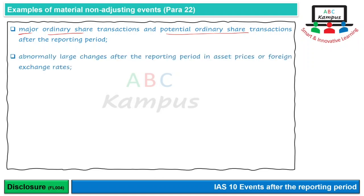Abnormally large changes after the reporting period in asset prices اور foreign exchange rates۔ اگر year end کے بعد foreign exchange rates change ہوں اور آپ کو huge gain یا huge loss ہو — چاہے favorable ہو یا unfavorable — وہ non-adjusting event ہے۔ لیکن اگر amount اتنی زیادہ ہے کہ وہ material ہے، تو پھر non-adjusting event والا disclosure دیا جائے گا۔